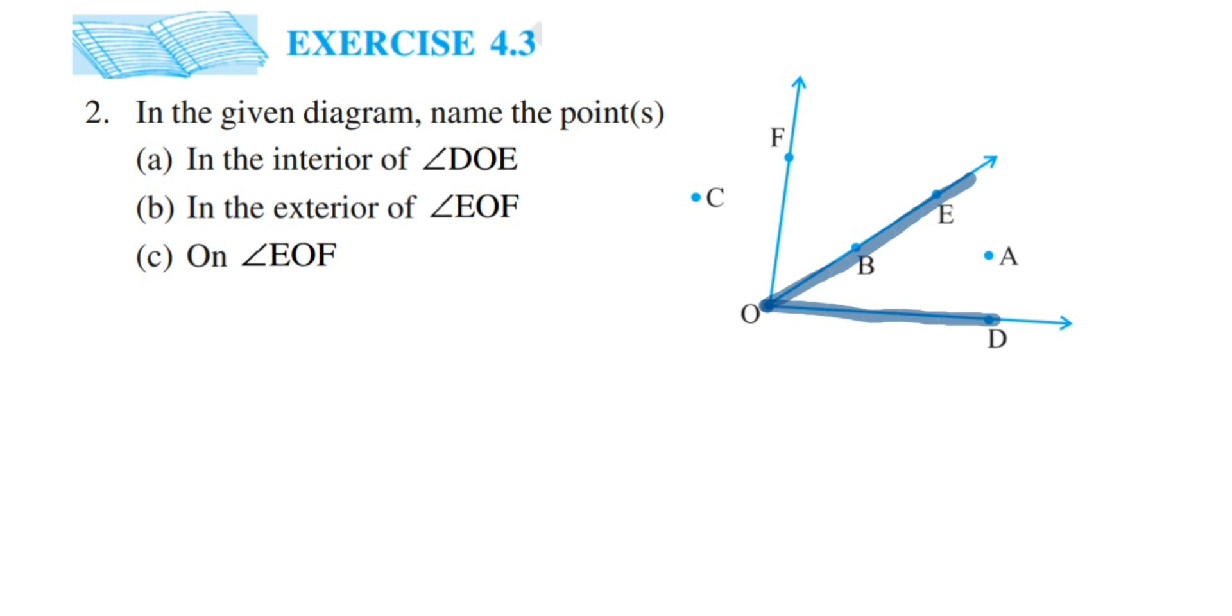The interior of DOE means you can see this space inside these two arms. We have this part here, so point A is the answer. The first question, it is point A.